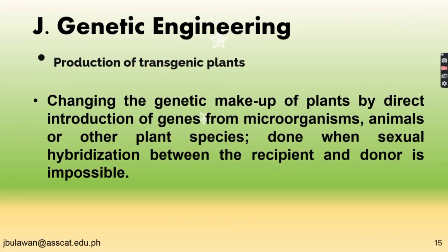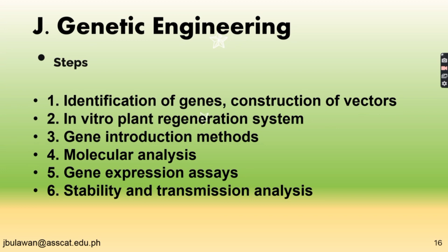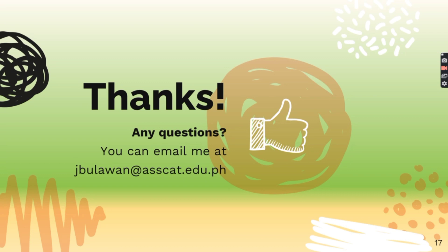For genetic engineering, we have the production of transgenic plants — changing the genetic makeup of plants by direct introduction of genes from microorganisms, animals, or other plant species, which is done when sexual hybridization between the recipient and the donor is impossible. The steps for genetic engineering are: first, identification of genes and construction of vectors; second, in-vitro plant regeneration system; third, gene introduction methods; fourth, molecular analysis; fifth, gene expression assays; and sixth, stability and transmission analysis.